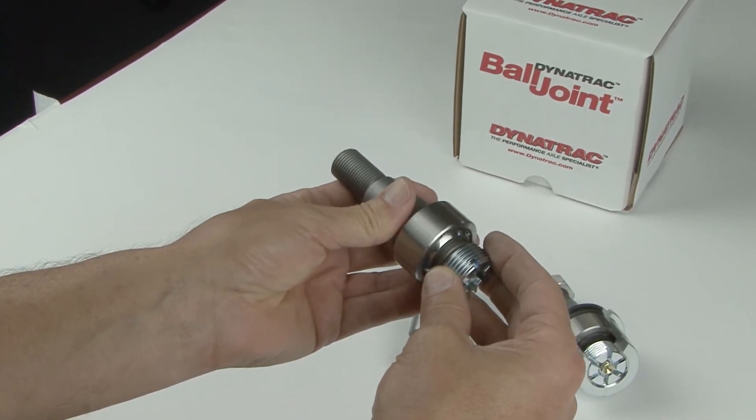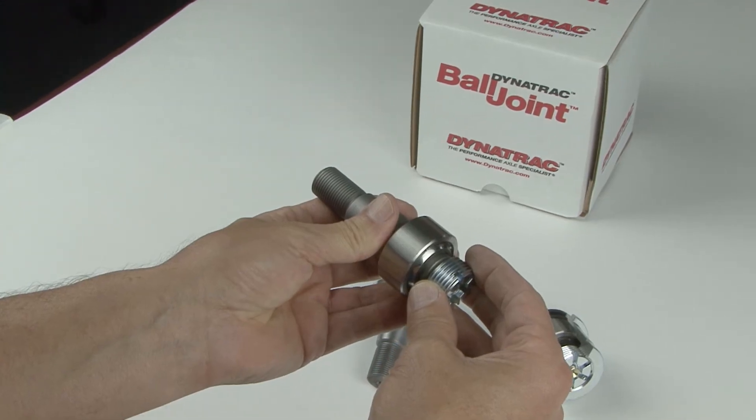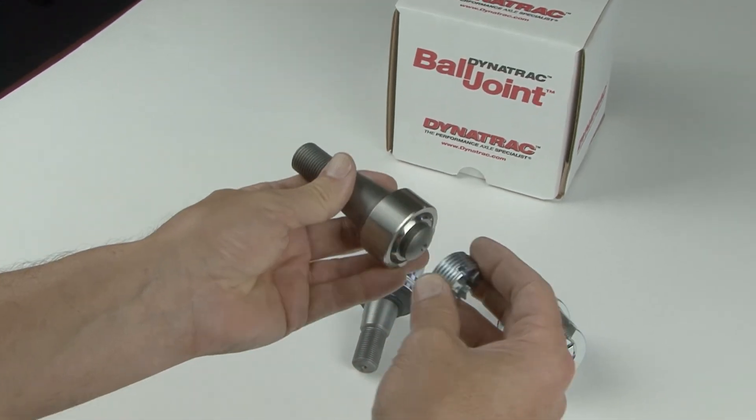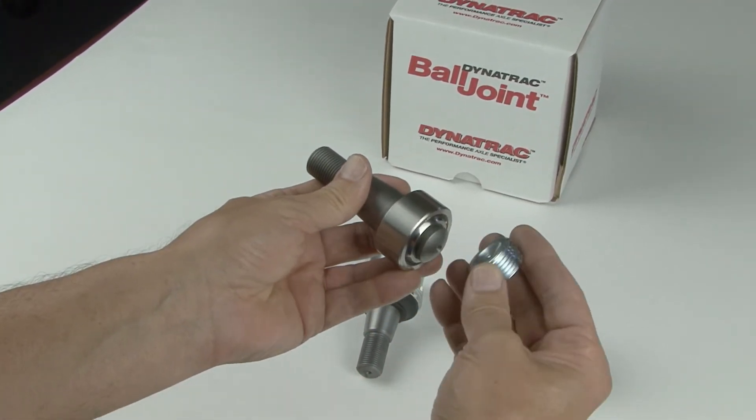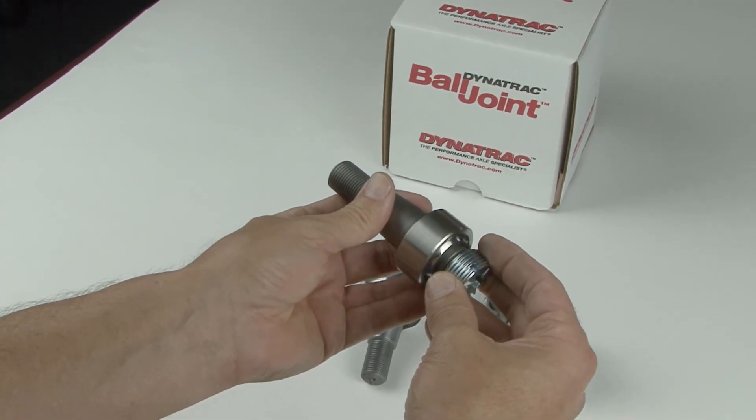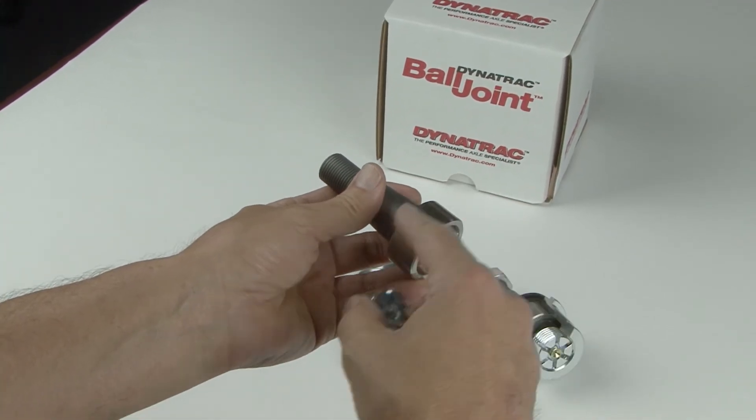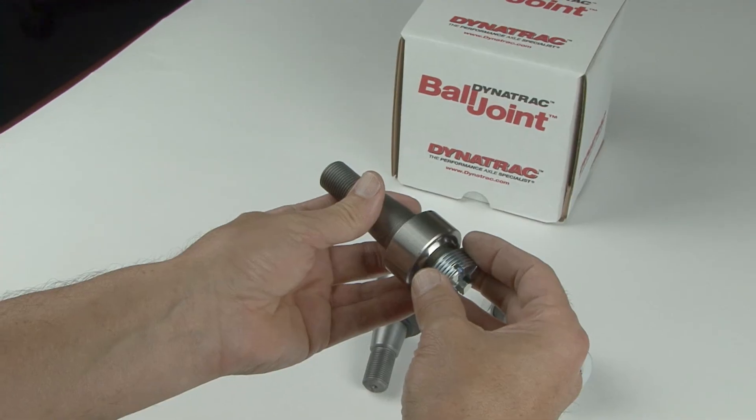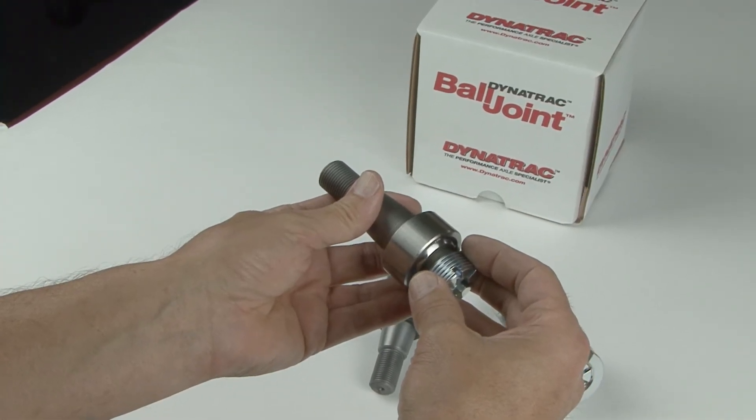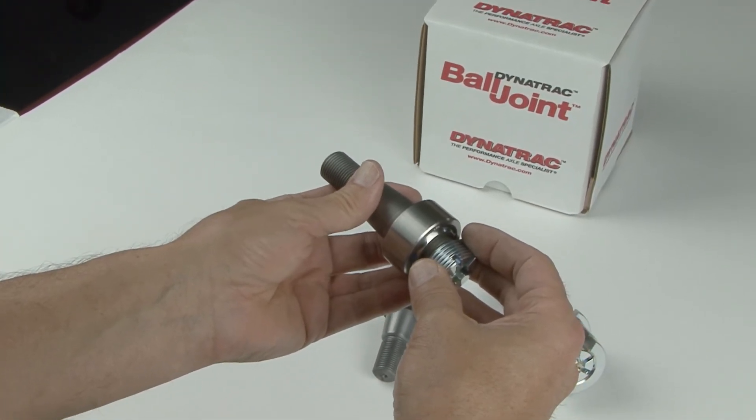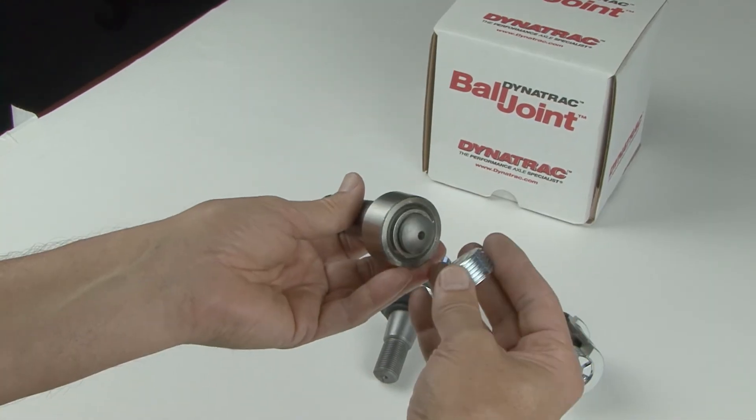It arrests the force and prevents that force from damaging the spherical bearing. Unlike the stock ball joint, it compresses the plastic lining and distorts it.